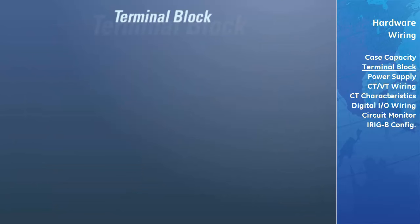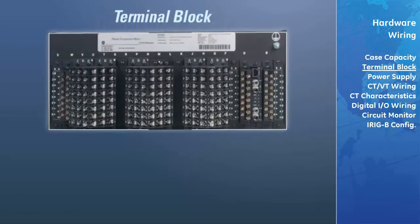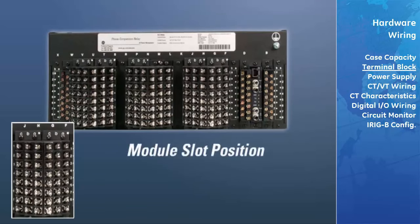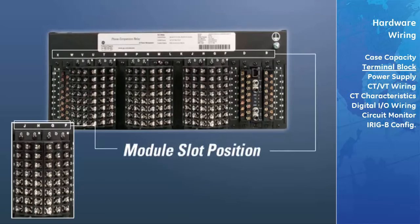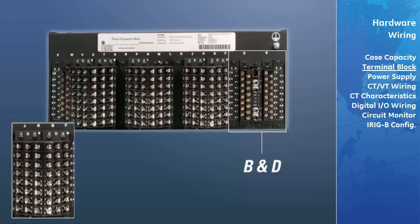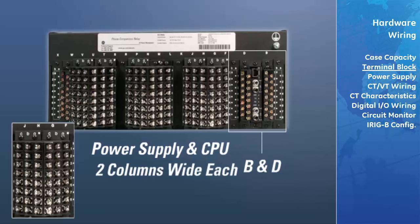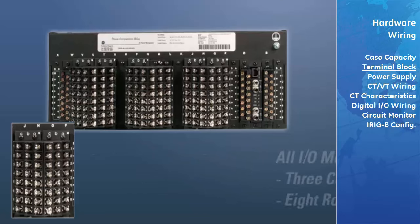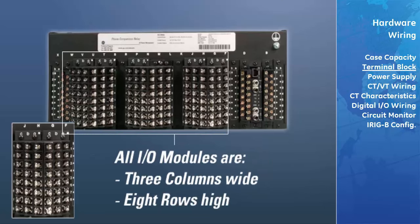The universal relay follows a terminal number assignment convention which is three characters long, assigned in order by module slot position, row number, and column letter. Slot B and D are reserved for the power supply and CPU module respectively, and are only two columns wide and eight rows in height. All I/O modules are three columns wide by eight rows in height.